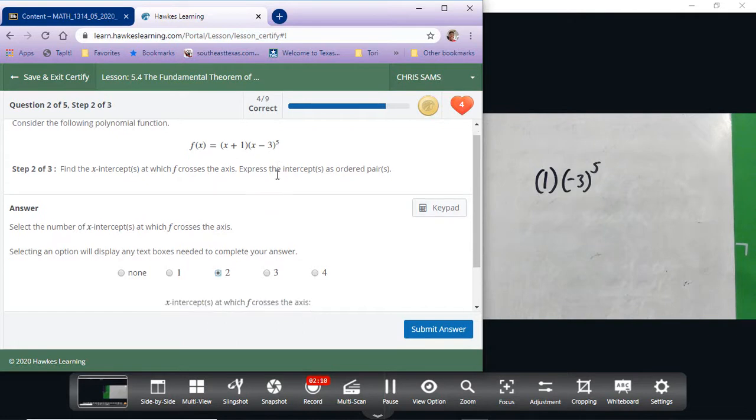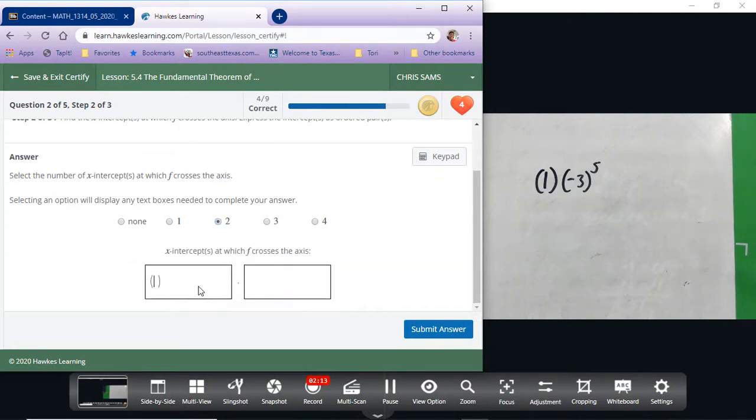So negative 1 and positive 3 will be our x-intercepts: negative 1, 0 and then positive 3, 0.